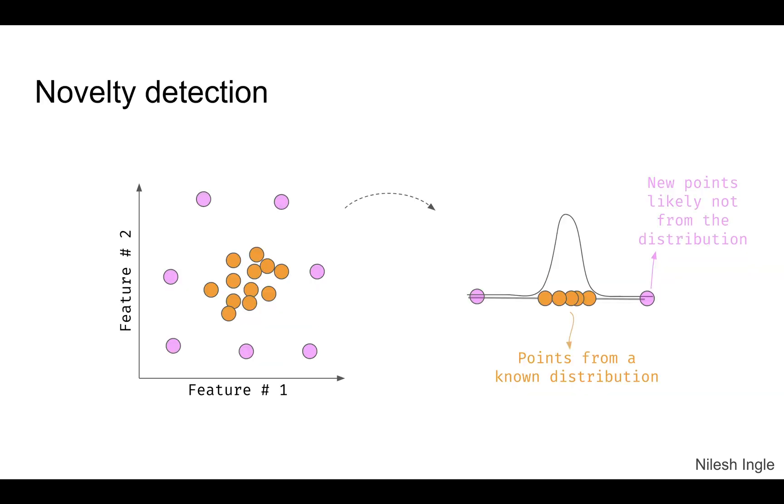Now for novelty detection, the general idea is we think of the data point as coming from a particular known distribution. Let's say the orange data points are coming from a distribution that is shown here by this black line. Now if we have data points such as the one shown by the magenta, if those data points appear to come from a different distribution or if they do not come from the distribution that we have shown here, then those would be considered as the novelty data points because they are away from what is normal.